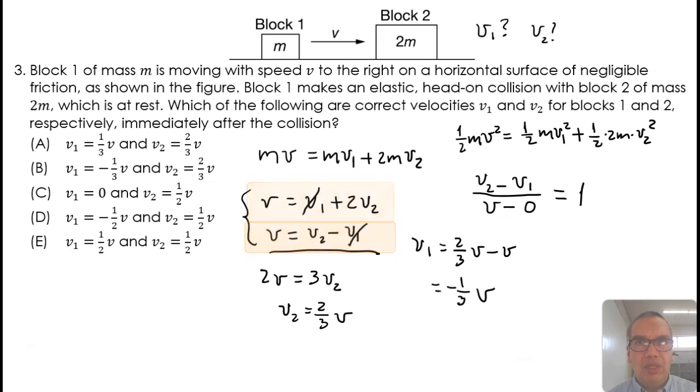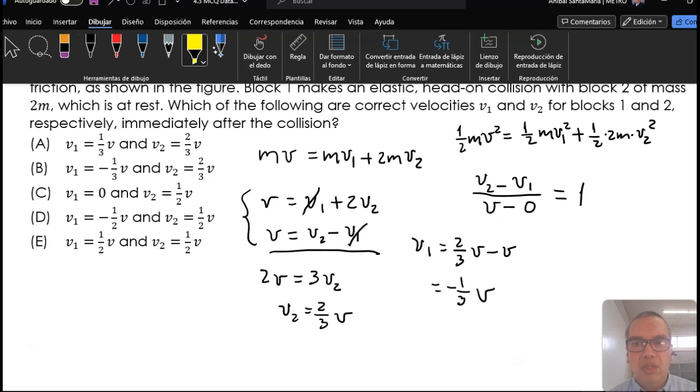So the final velocities are negative 1/3 v and positive 2/3 v. This is of course, option D.